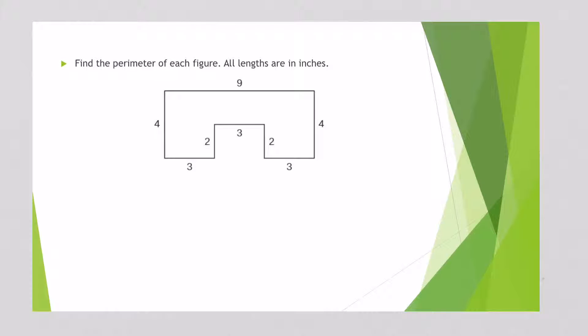Looks like we're going to do this problem the same way. So this side right here is 9, this side right here is 4, this side is 3, this side is 2, 3, 2, 3, and the last side is 4.